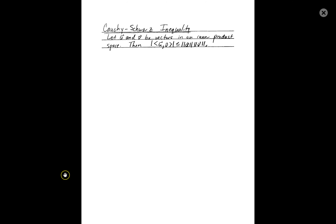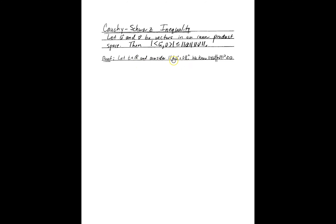The proof of this requires a little bit of ingenuity. We'll start with a scalar t in ℝ, and then we're going to consider the magnitude squared of the vector tu plus v. Since we're taking a magnitude and squaring it, we know the magnitude squared cannot be negative — it has to be greater than or equal to zero.